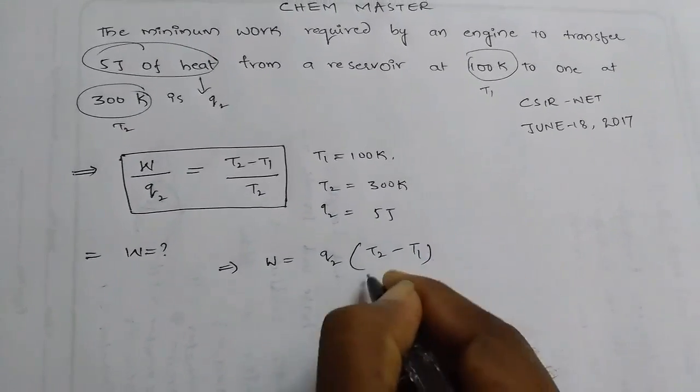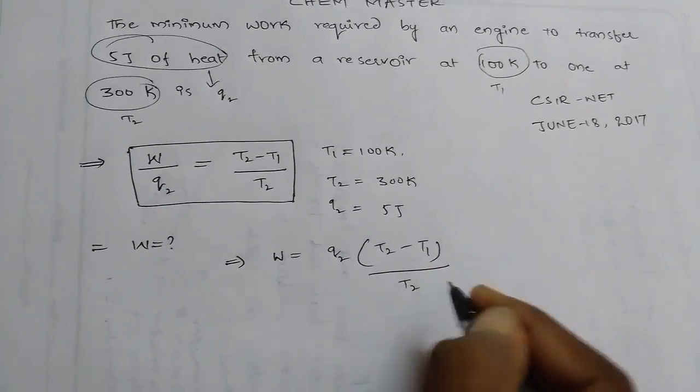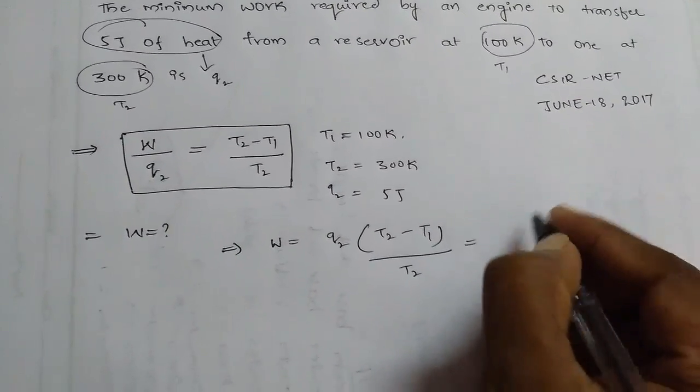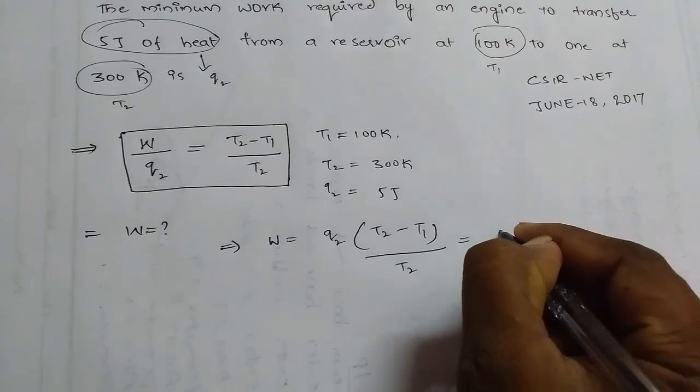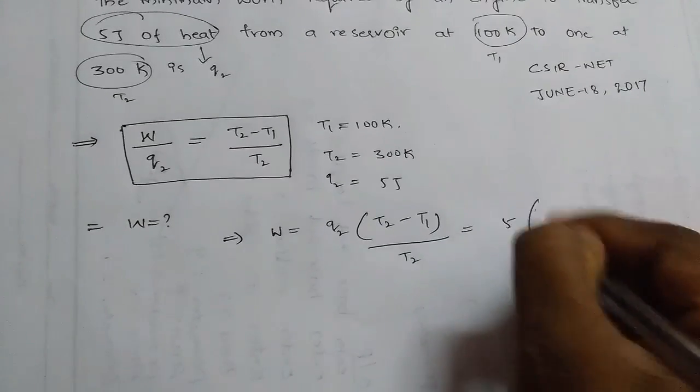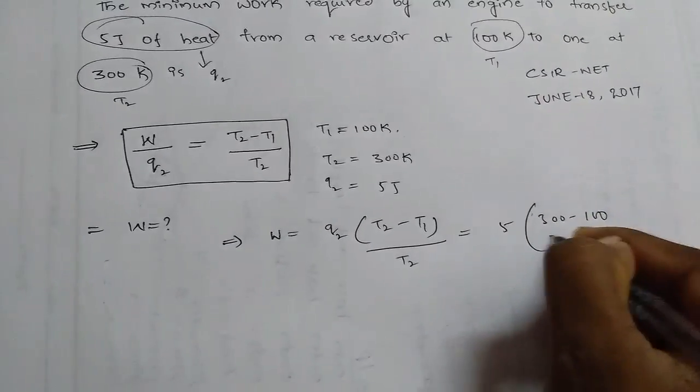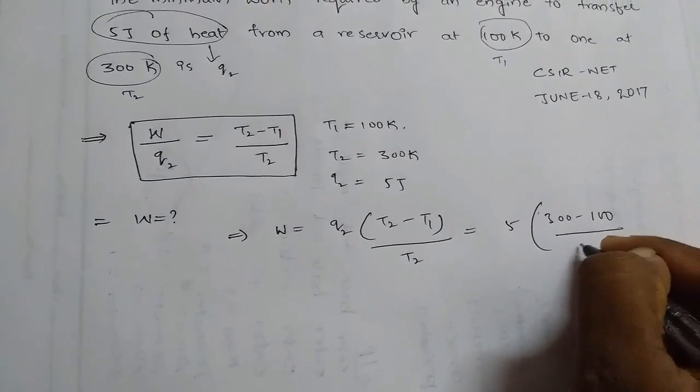From this we can write W = 5 × (300-100)/300.